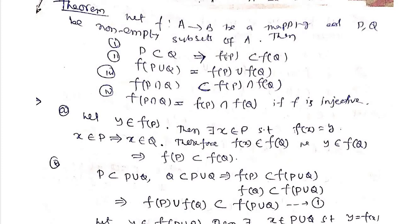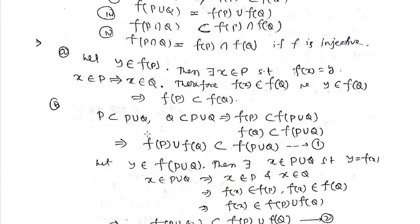To prove that f(P) ⊆ f(Q) when P ⊆ Q: take an element y in f(P). Then there exists x in P such that f(x) = y. Since P ⊆ Q and x belongs to P, x also belongs to Q. Therefore f(x) belongs to f(Q), that is y belongs to f(Q).